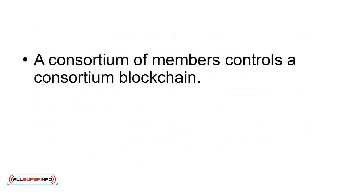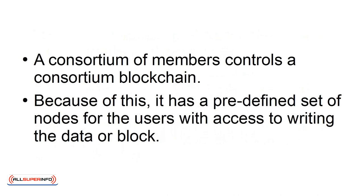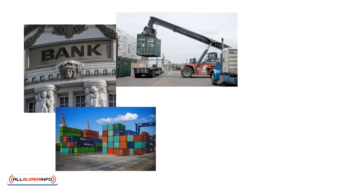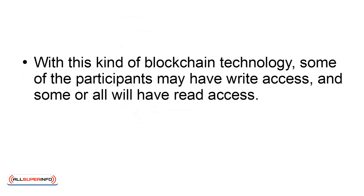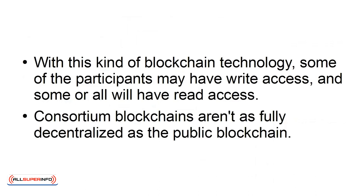Consortium Blockchain. A consortium of members controls a consortium blockchain. Because of this, it has a predefined set of nodes for the users with access to writing the data or block. Members of a consortium blockchain may be participating banks, exporters, importers, ports of sending and receiving countries, custom officials, etc. With this kind of blockchain technology, some of the participants may have write access, and some, or all, will have read access. Consortium blockchains aren't as fully decentralized as the public blockchain.